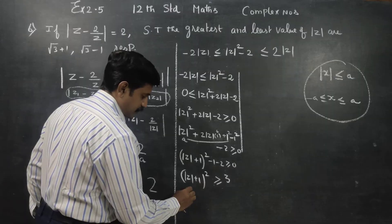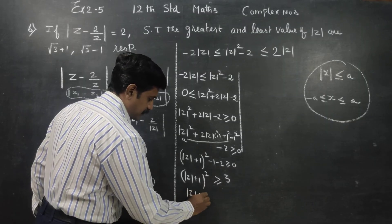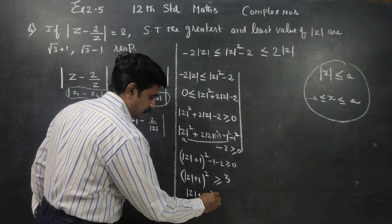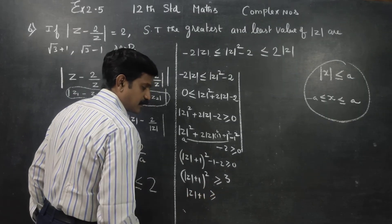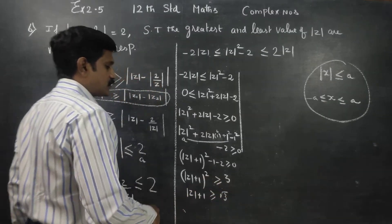Taking square root on both sides: modulus of z plus 1 is greater than or equal to square root of 3.